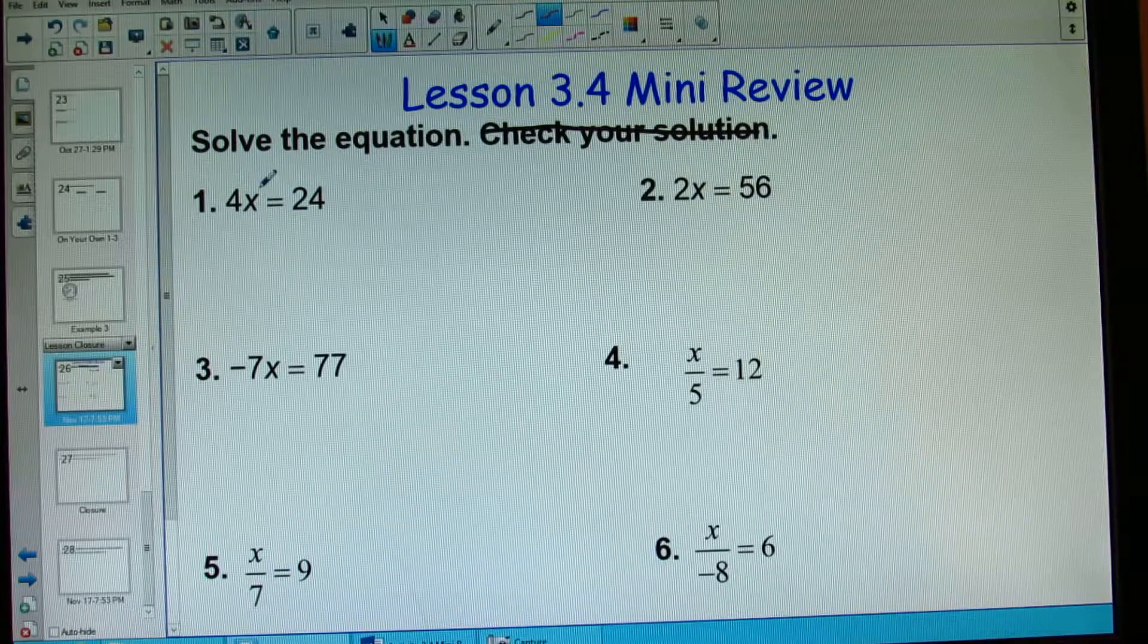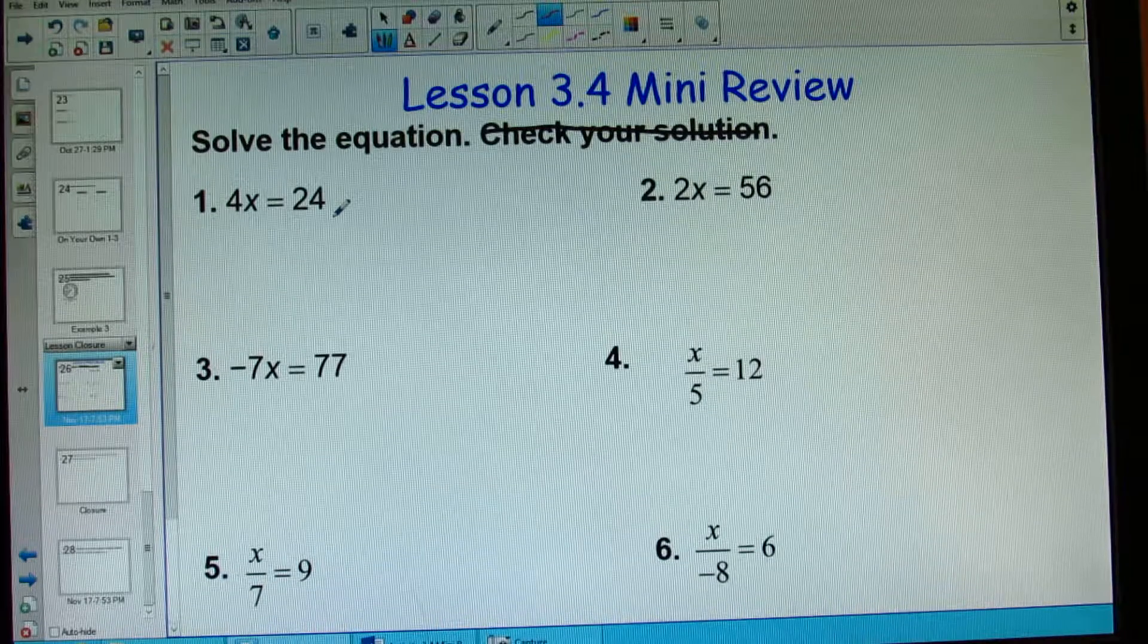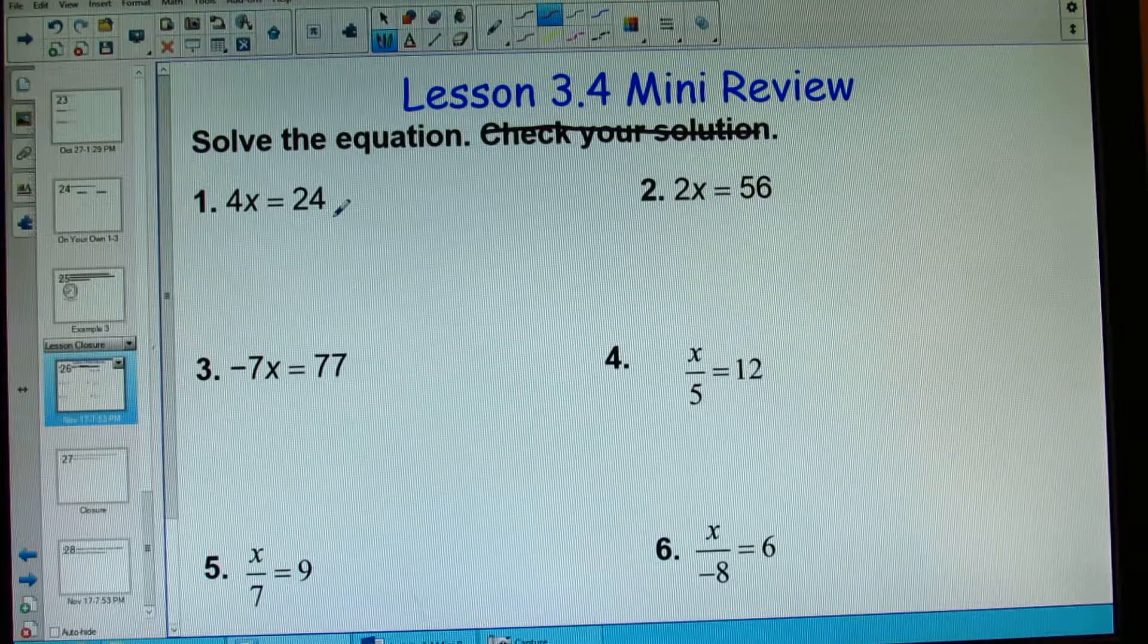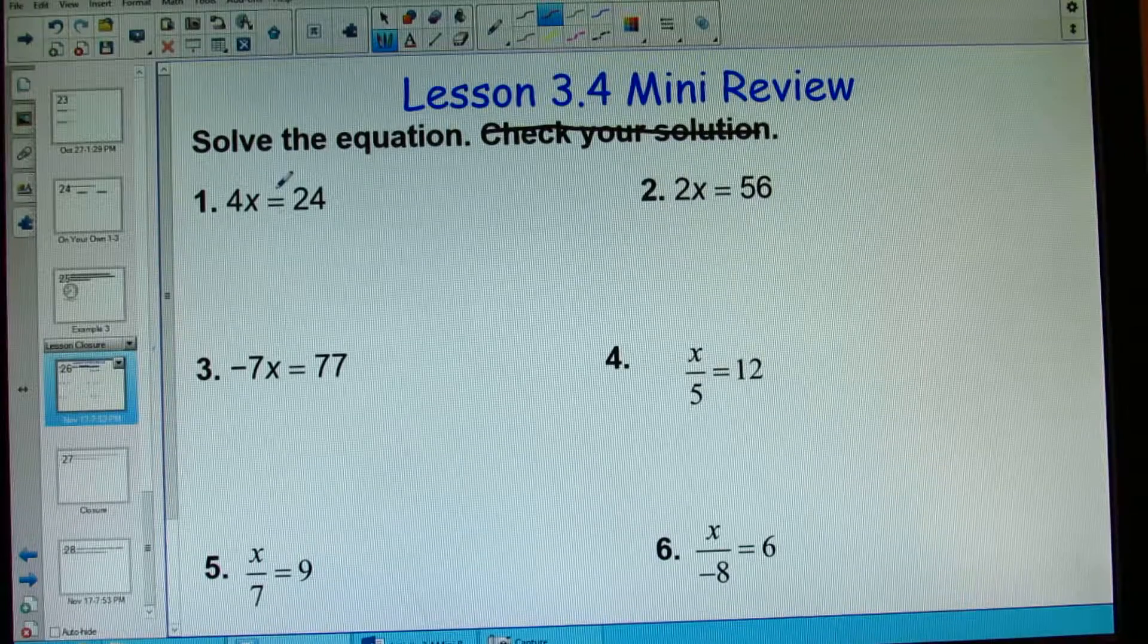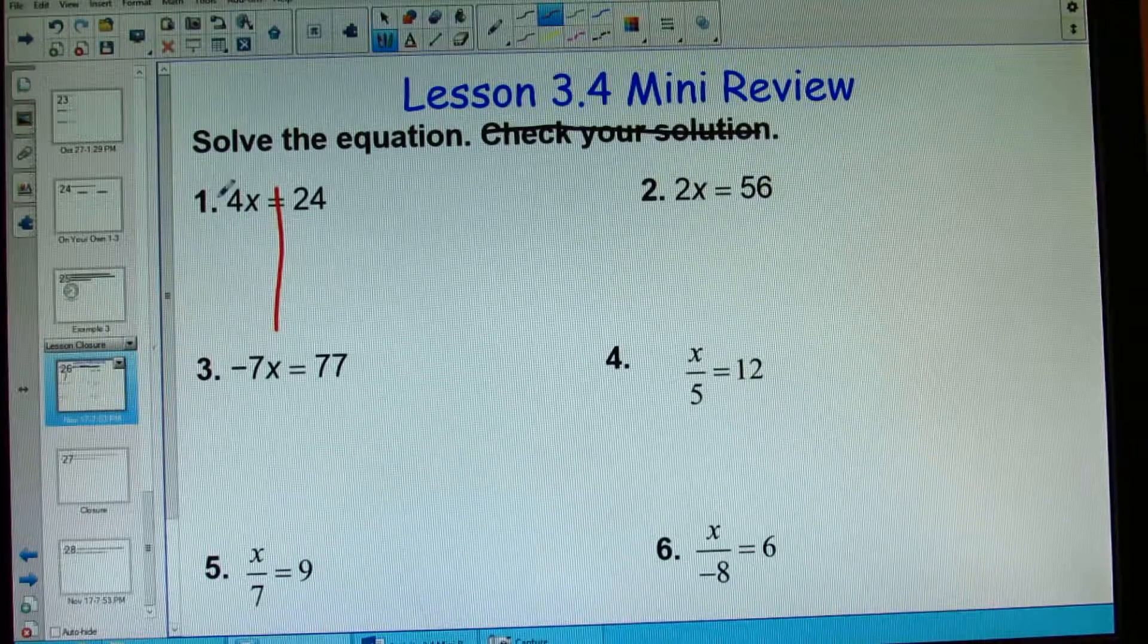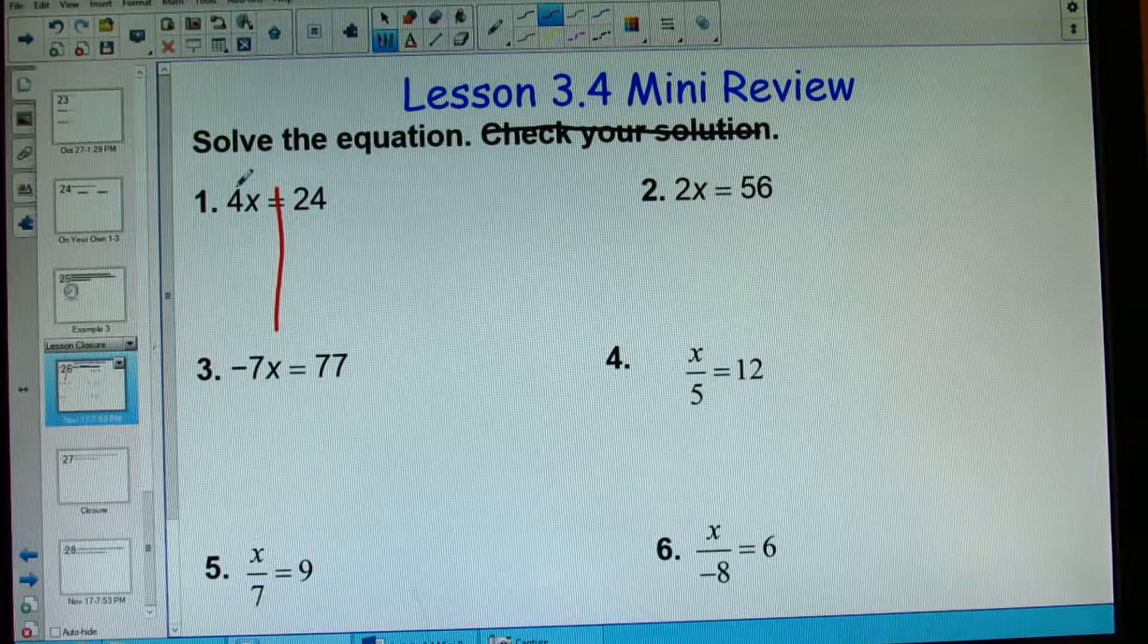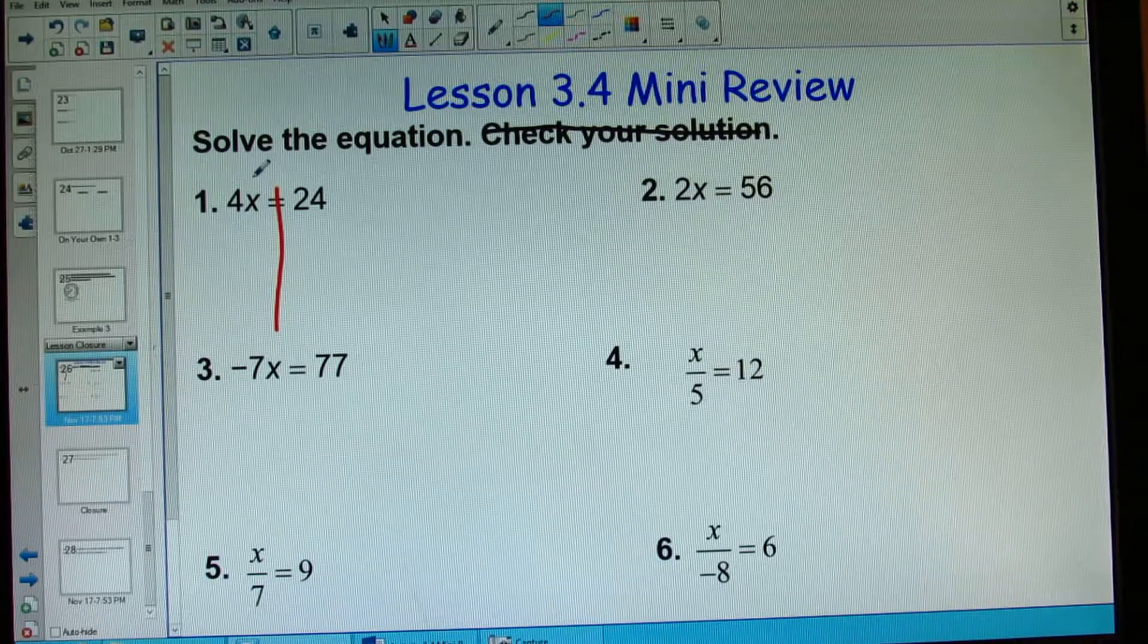First one, 4x equals 24. Your job when you're solving an equation is to isolate the variable, the letter. You want to get anything on the side of the variable away from it. So in this case I want to get rid of 4. Now what is 4 actually doing with x right now? What operation?